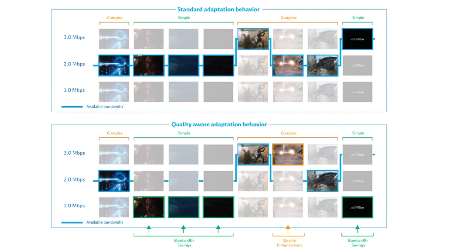In comparison, when we look at our quality-aware adaptation behavior: if it detects a low-complexity scene, we switch down to one megabit in this scenario while maintaining the same perceptual quality. The user won't notice — the only thing we achieve is bandwidth savings.